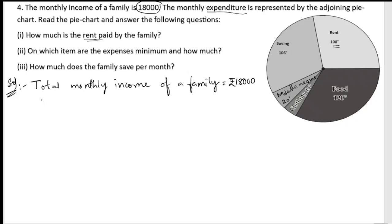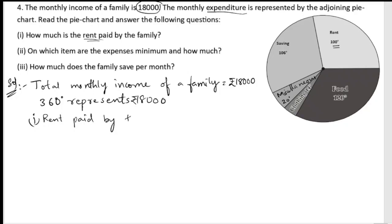We know that the whole circle represents 360 degrees, and that 360 degrees represents the total amount of ₹18,000. So to find the rent, we write: rent paid = (18,000 ÷ 360) × 100. We cancel the zeros — 18,000 divided by 360.